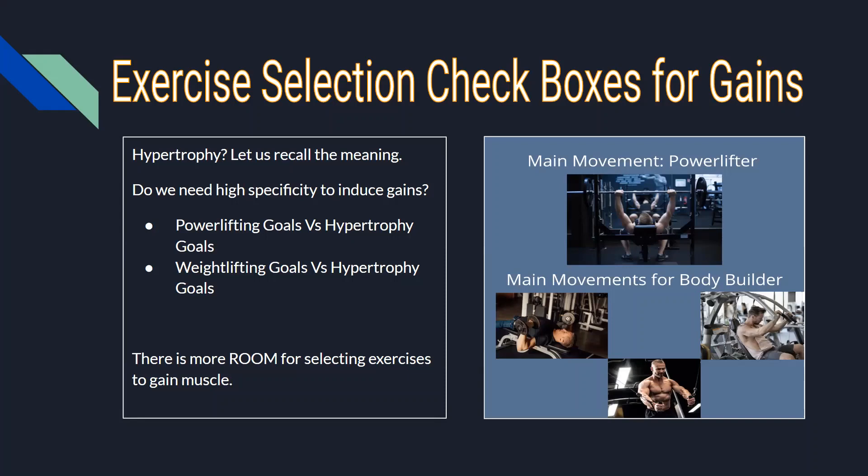The muscle produces mechanical tension to oppose external loads. We do not have to have a rigid mindset towards exercise selection. We could have the same improvements in lower body development using a variety of movement patterns — not just the squat. It is not just bench pressing; it could be dumbbell pressing, chest flies, or machine presses. Sufficient mechanical tension will help grow muscle over time, given that nutrition and recovery are on point. Exercise selection is essential, but there is much more leeway in choosing the right exercise for a particular person or population.